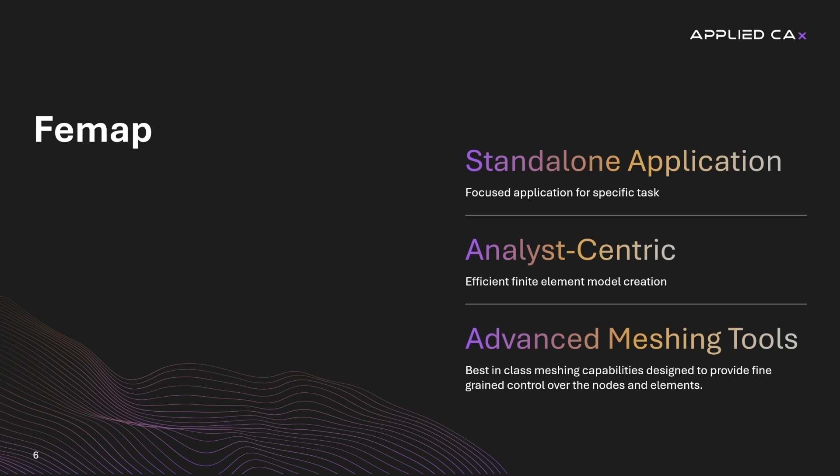FEMAP, on the other hand, is a standalone application focused on pre- and post-processing simulation models. Its toolset is analyst-centric, providing for very efficient finite element model creation with advanced meshing tools. These tools are best in class for creating and manipulating models at the node and element level. The analyst has extremely fine-grained control over the model. Many of the same controls are available in SimCenter 3D, but FEMAP being purpose-built tends to be more direct and efficient with this control.